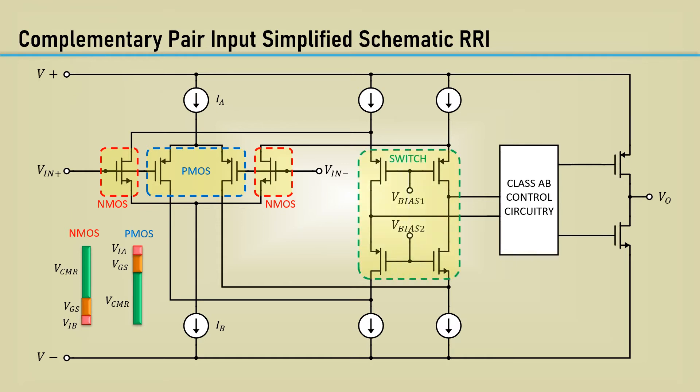Then there's a switch that switches between the two pairs, based on an upper and lower DC bias point. In the middle of the range, both sets of transistors are active. I'm sure you're already thinking about all the imperfections caused by this elaborate configuration.